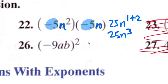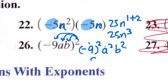This here you distribute the exponent. Negative nine squared, a squared, a squared, b squared, so it's 81a squared b squared.